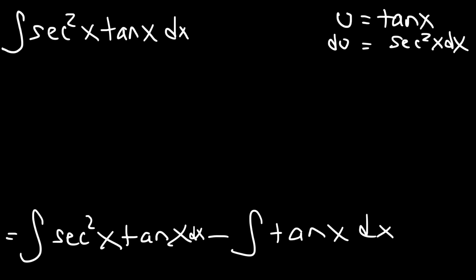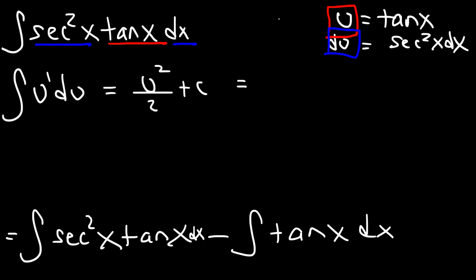So let's replace tangent x with the u variable. So this is going to be the integral of u. And then let's replace secant squared dx with du because du is equal to secant squared dx. So we have the integral of u du. And using the power rule for integration, we're going to add 1 to the exponent and then divide by that result. So now we need to replace u of tangent. So we have the integral of secant squared tan x, which is 1 half tangent squared x plus c.